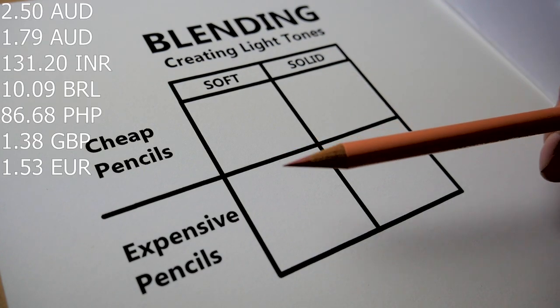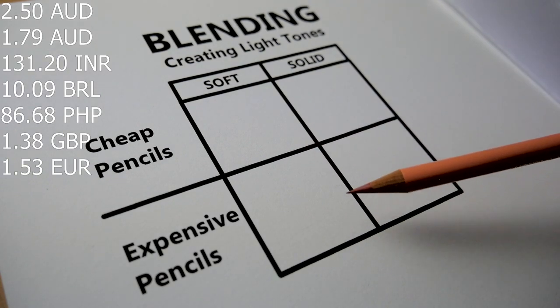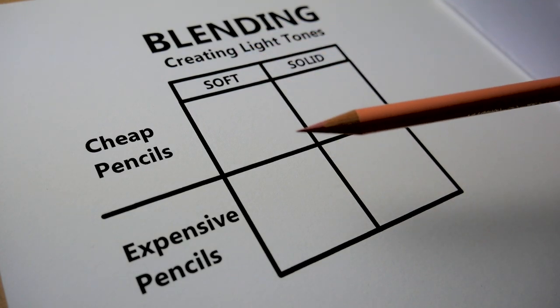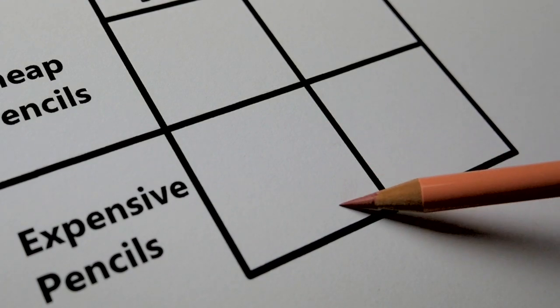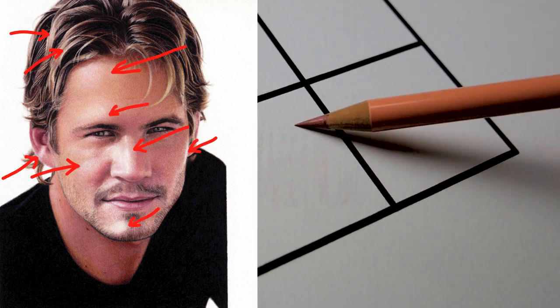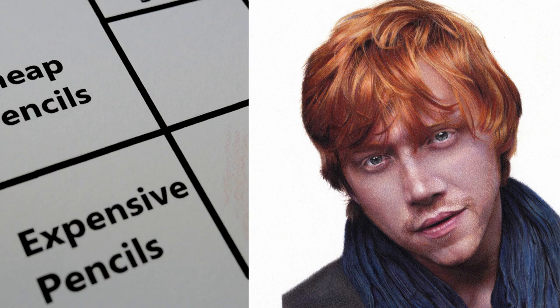This is my Polychromos pencils. They're very expensive, about $2.50 per pencil, so I'm going to show you a demonstration of a soft layer using these. I've used this in my portraits quite a lot. See this Paul Walker portrait in the hair? I used this method there. In the Rupert Grint portrait, I used this method on that as well.